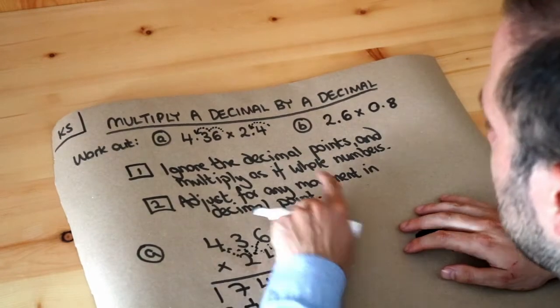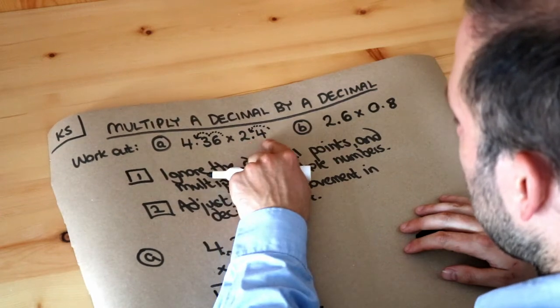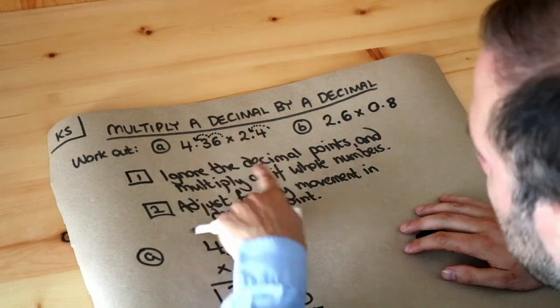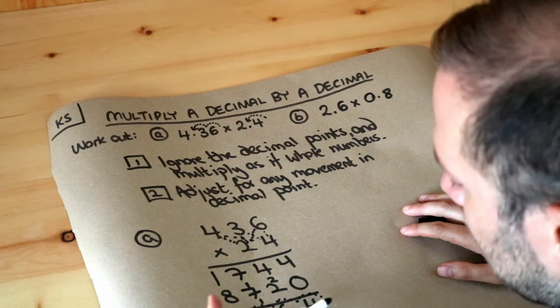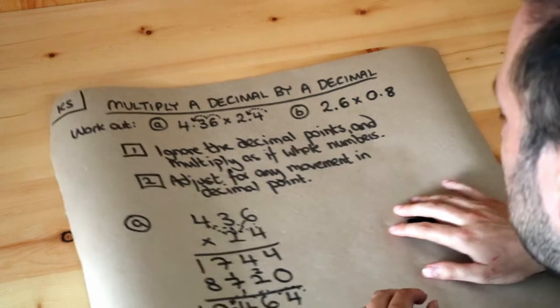And the way to do a common sense check with this is just to round these numbers and then times them. So 4.36 is roughly 4, 2.4, let's say, is roughly 2, 4 times 2 is 8. It's going to be a bit more than 8 though, because these are slightly more than 4 and 2. And indeed, look, this is 10, it's the right kind of ballpark. Rather than, say, I don't know, 104 point something, we'd know we'd got it wrong because that's very far away from 8.